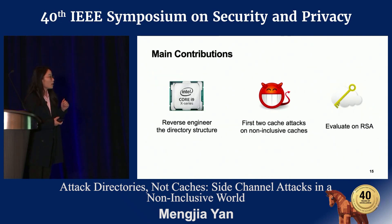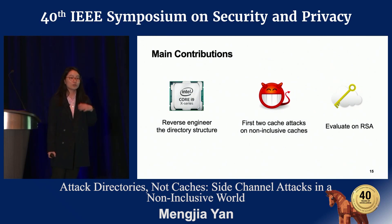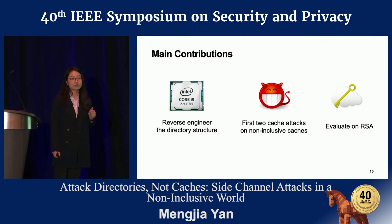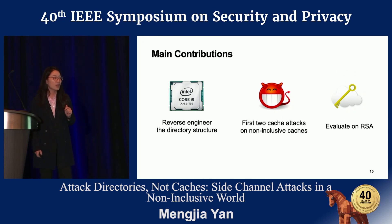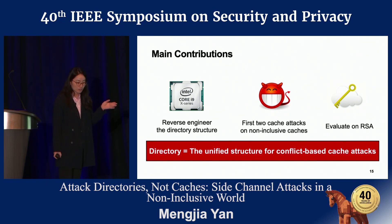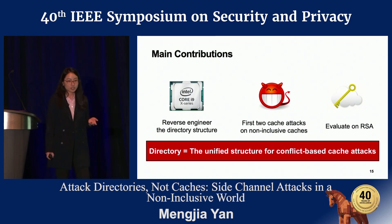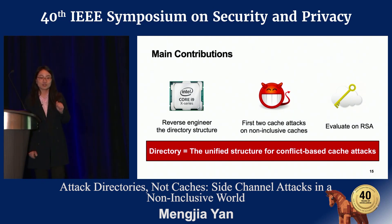To summarize: in this paper, we reverse-engineered the directory structure and proposed the first two conflict-based cache attacks that work on the non-inclusive Intel Skylake-X processor, evaluating them on RSA encryption. We conclude that the directory is the unified structure for conflict-based cache attacks — because when you attack an inclusive cache, you are also attacking the directory. Thank you, and I'm ready for questions.